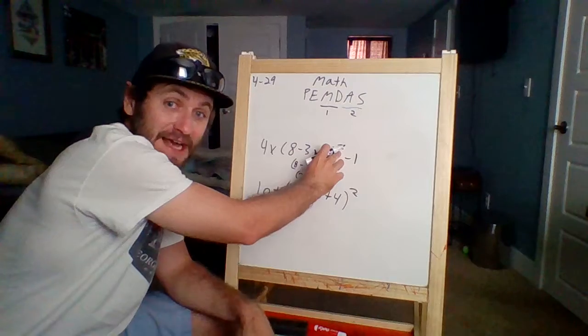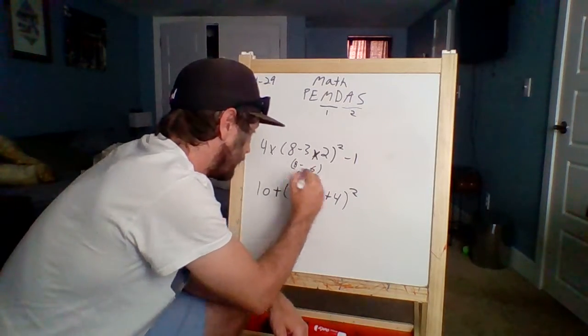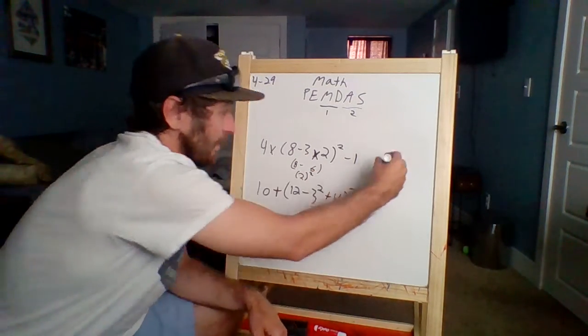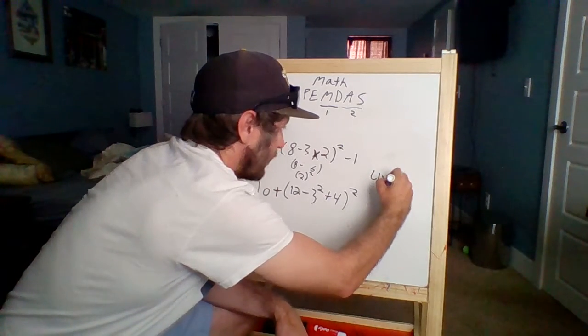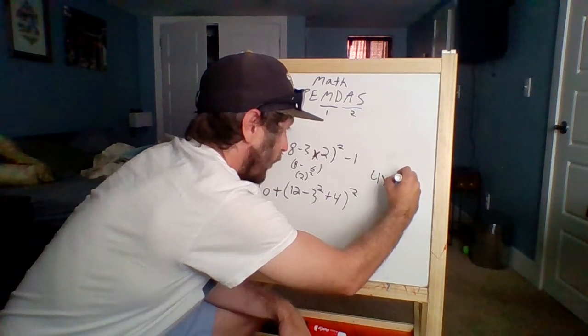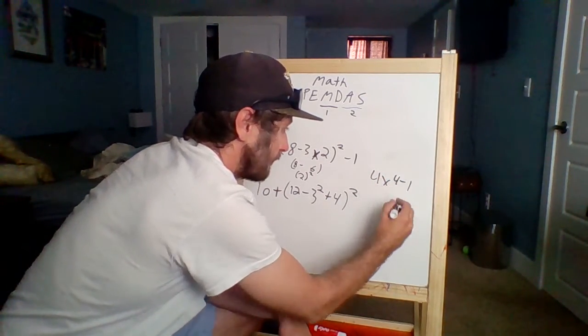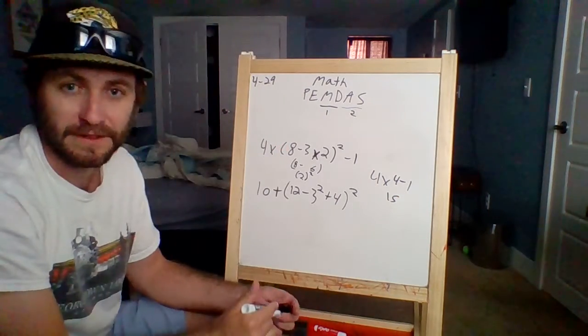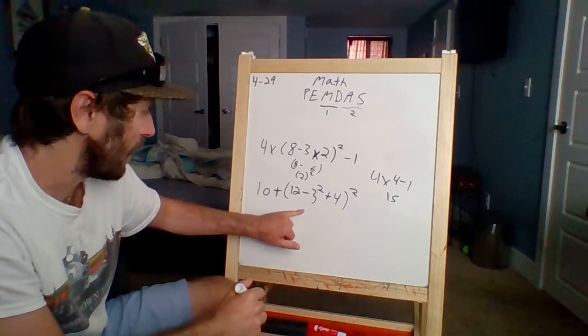Everything in that parentheses has that exponent to square it. Two squared. Sorry, I'm going to slide over here. So four times four minus one equals 15. Now look down here.